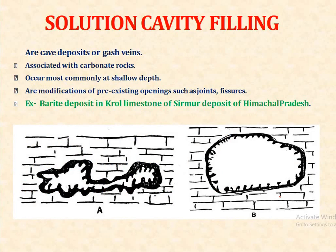Solution cavity fillings — all cave deposits or gas veins are associated with carbonate rocks. They occur most commonly at shallow depth and are modifications of pre-existing openings such as joints and fissures. The barite deposit in Krol limestone at Sirmo deposit in Himachal Pradesh is an example of solution cavity fillings, where solution cavities form in carbonate rock and are filled by hydrothermal deposits.